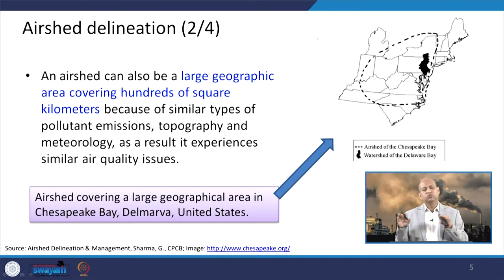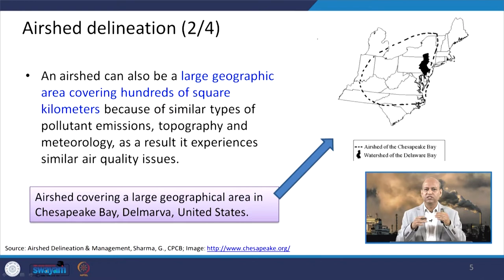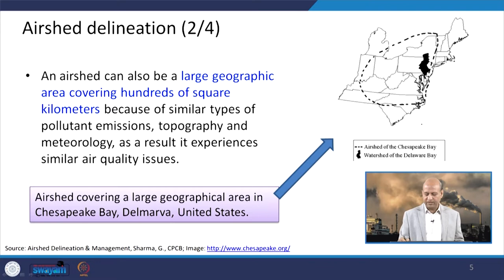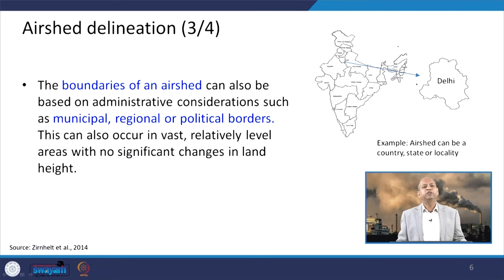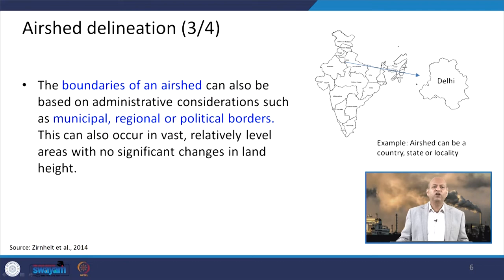As a result, the area experiences similar air quality issues. Wherever you go you will find similar emission sources — in a city you find vehicular emissions, industries, domestic sources — but another city can have different sources and a different air shed. The boundaries of an air shed can also be based on administrative considerations, such as municipal corporations, regional or political borders. For example, Delhi can be called one air shed, or some coastal regions can be called an air shed.